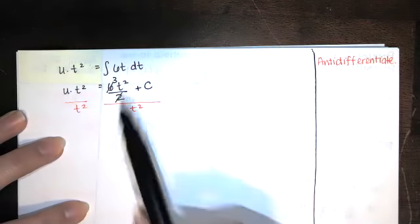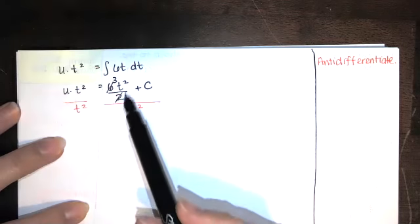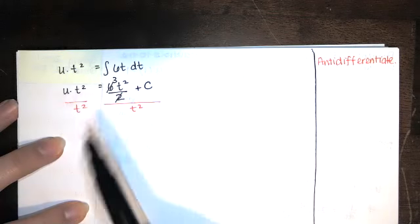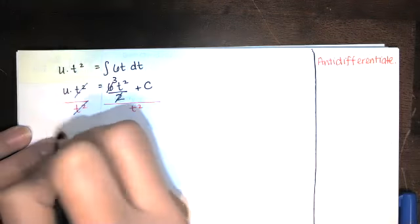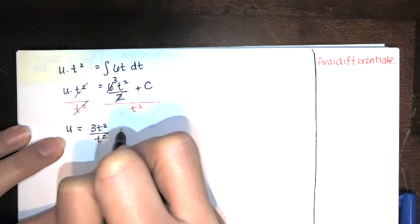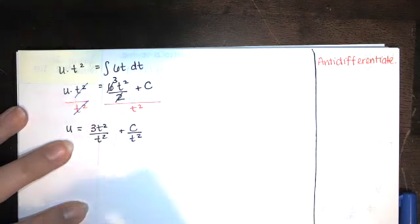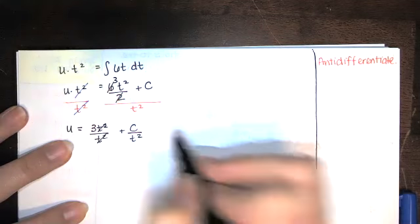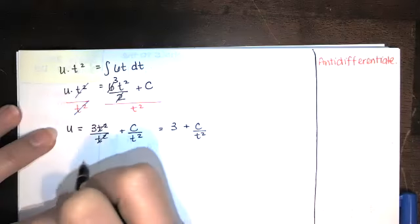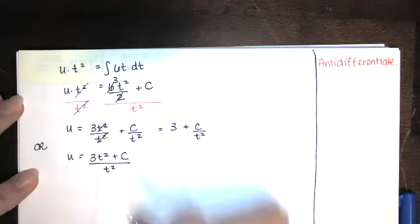Now we almost have u by itself — it's multiplied by t squared, so we will divide by t squared to get u by itself. A lot of people forget that the entire right-hand side has to be divided by t squared, not just one term. This c has to be divided by t squared as well. So we reduce the t squareds and we have u equals 3t squared over t squared, which is 3, plus c over t squared. You could simplify it as 3 plus c over t squared, or leave it as 3t squared plus c divided by t squared.